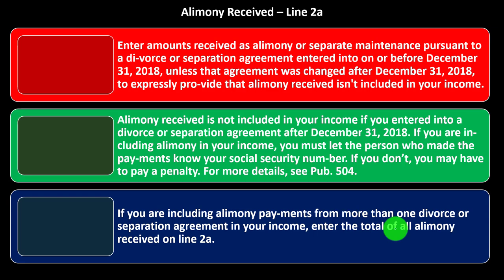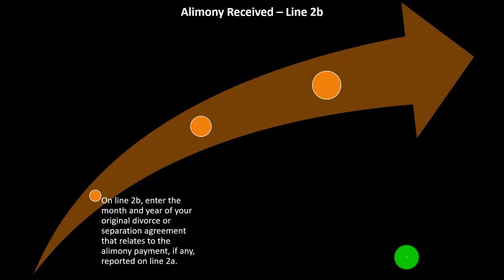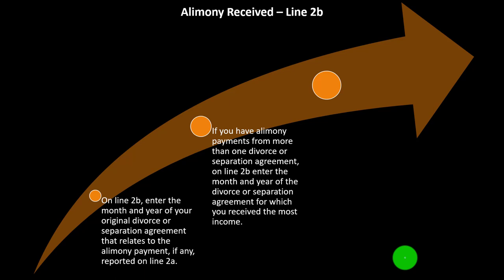It's a similar situation to a 1099 — if one person paid the other and gets the deduction, they've got to tell the IRS who they paid the money to, so the IRS can charge the income on the other side. If you are including alimony payments from more than one divorce or separation agreement in your income, enter the total of all alimony received on Line 2a. On Line 2b, enter the month and year of your original divorce or separation agreement that relates to the alimony payment reported on Line 2a.